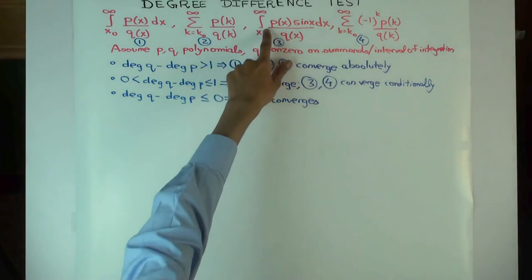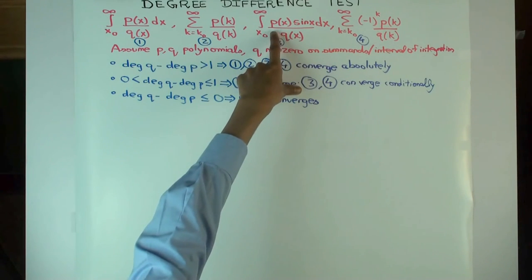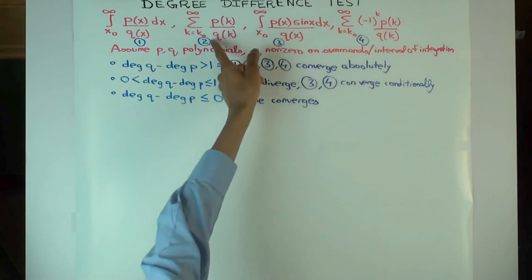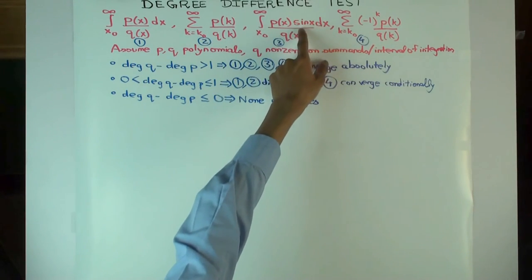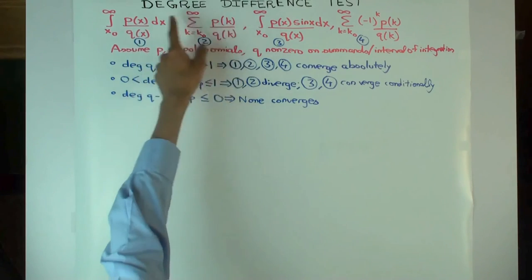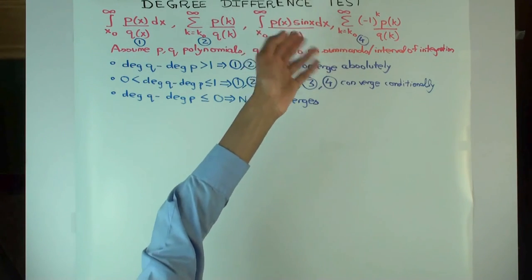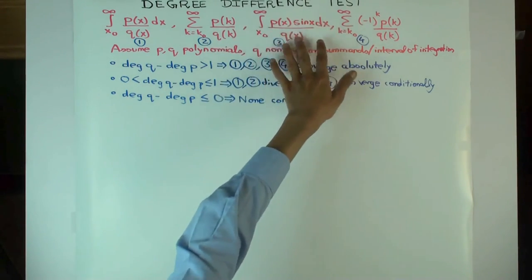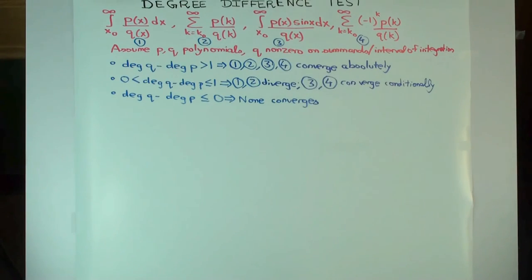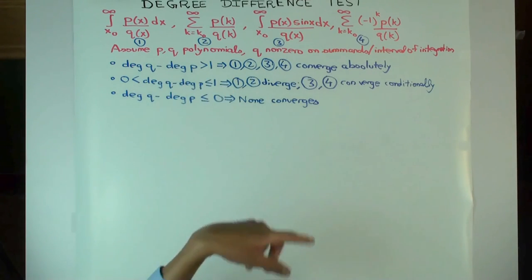The explanation for the trigonometric integral case is trickier, so we'll skip over that. The sine function plays a similar role in integration as (-1)^k does in summation — you can't do (-1)^x in integration since you can't raise negative numbers to non-integral powers, but you can multiply by sine. So in summary: for the signed types, the degree difference needs to be greater than 0; for the unsigned types, it needs to be greater than 1.